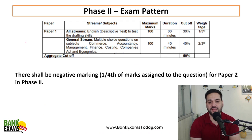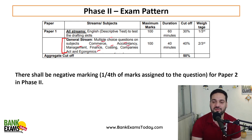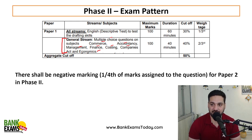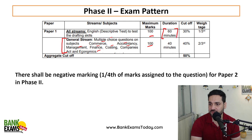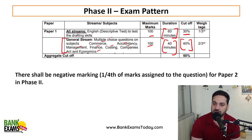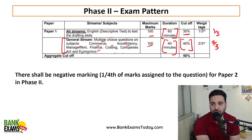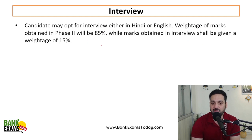In phase two, the syllabus is almost the same. For the general stream there are MCQs covering commerce, accountancy, management, finance, costing, companies act, and economics. But there is also a descriptive paper of English to test the drafting skills of candidates. 100 marks each — 60 minutes are allotted for the English descriptive paper and 40 minutes for the general stream paper. Cutoff is 30% for the English descriptive paper and 40% for the general stream professional paper. One-third weightage is given to paper one and two-thirds weightage to paper two. 85% weightage is given to phase two and 15% weightage to the interview.